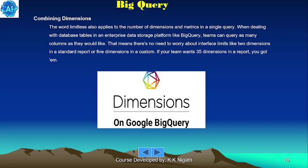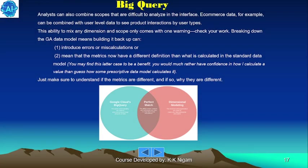The word 'limitless' also applies to the number of dimensions and metrics in a single query. While working with database tables in an enterprise data storage platform like BigQuery, teams can query as many columns as they like — no need to worry about interface limits like two dimensions in a standard report or five in a custom report. If your team wants 35 dimensions in a report, you've got them. Analysts can also combine scopes that are difficult to analyze in the interface; e-commerce data, for example, can be combined with user-level data to see product interactions by user type.